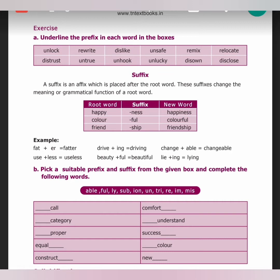Underline the prefix in each word: unlock (un-), rewrite (re-), dislike (dis-), unsafe (un-), remix (re-), relocate (re-), distress (dis-), untrue (un-), unlucky (un-). Similarly, suffix means it is placed after the root word — for example, happiness, colorful.